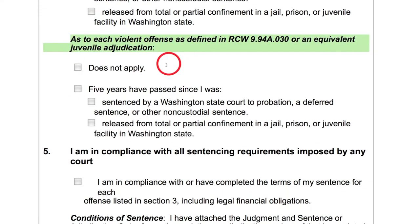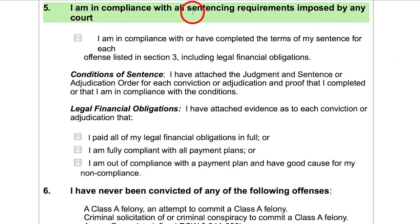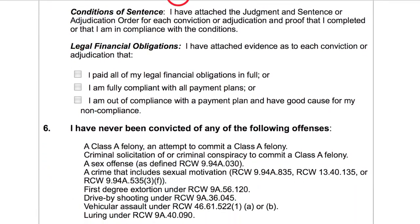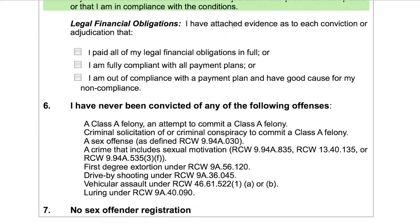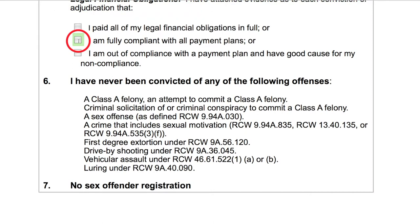Finally, they ask about violent offenses, which have longer wait times. If you're unsure whether your conviction qualifies as a violent offense, you can search online for RCW 9.94A.030, where you can find a list of all convictions considered violent offenses. Read through the eligibility criteria and select the box that applies to you. Number five checks that you are in compliance with your sentencing requirements unrelated to incarceration. The conditions of your sentence will be listed in the judgment and sentence document for each conviction. Legal financial obligations are the fees, fines, and restitution associated with a criminal conviction in Washington state. If you haven't finished paying your LFOs, you'll have to show that you are making your court-ordered payments or show proof that you can't make those payments due to financial hardship. Check the box that applies to you.